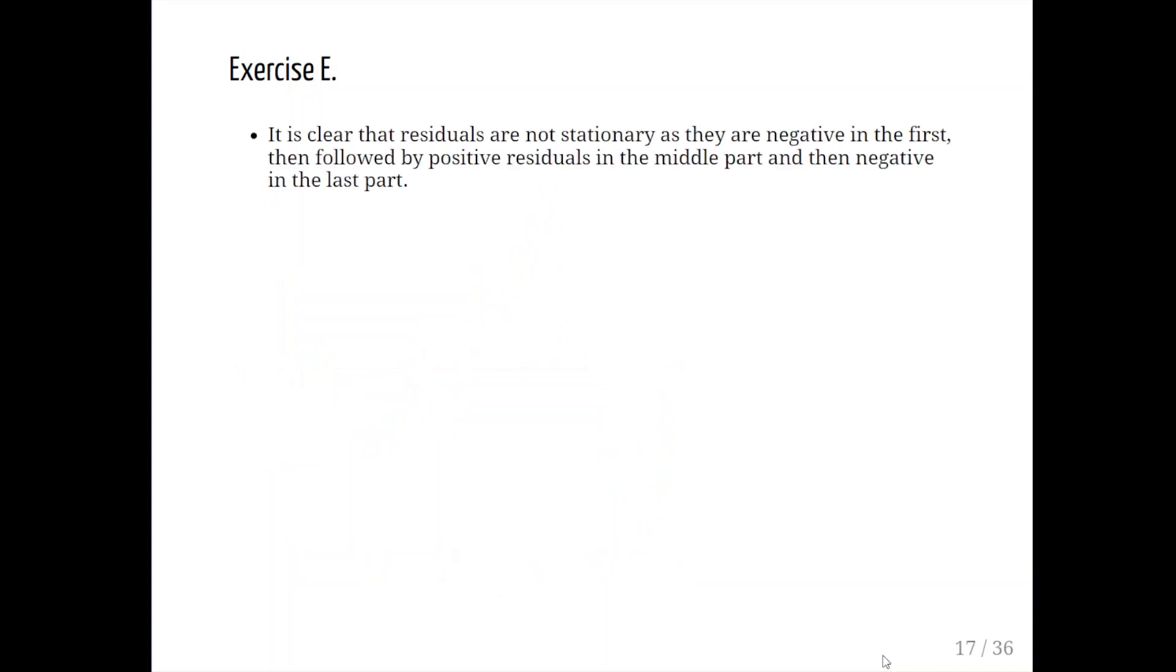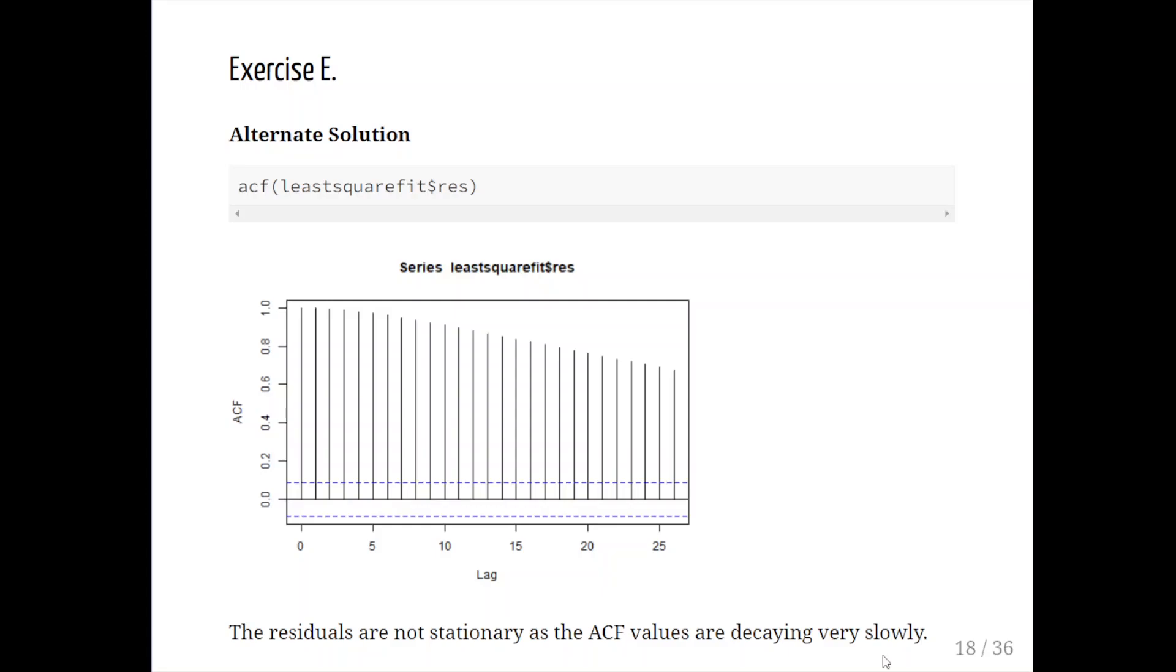An alternative solution is using the ACF function again using the residuals from the least square fit and just seeing what the behavior is across the time series. The command is ACF to look at stationarity in this case of the residuals rather than the underlying points. The residuals are not stationary as the ACF values are decaying slowly and notice they're well outside the blue bands at the bottom.